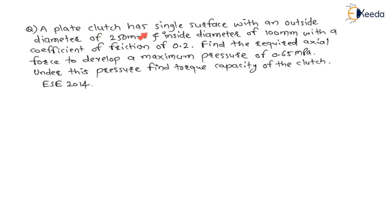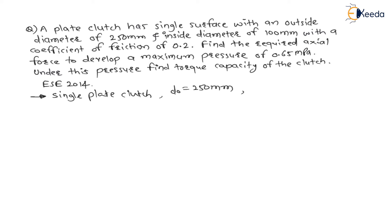A plate clutch has a single surface — single surface means it is a single plate clutch. The outside diameter is 250 mm and inside diameter is 100 mm. So outside radius Ro = 125 mm and inside radius Ri = 50 mm.